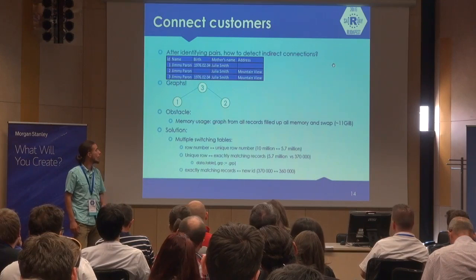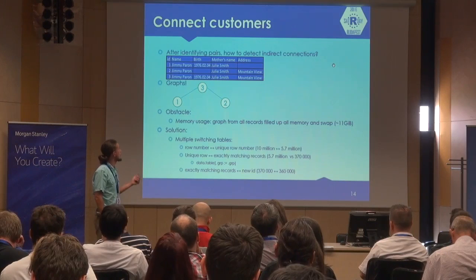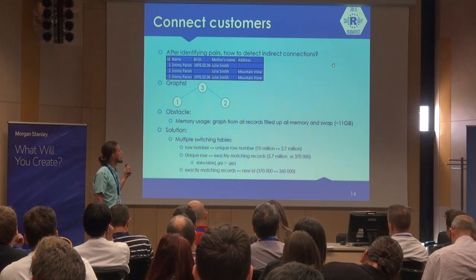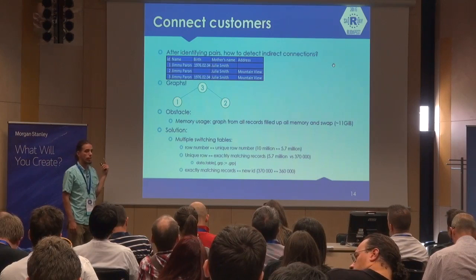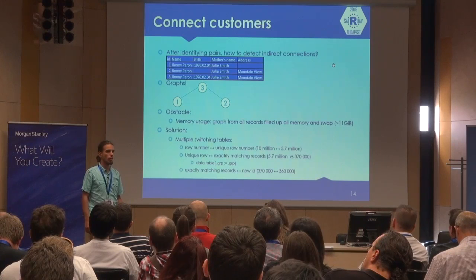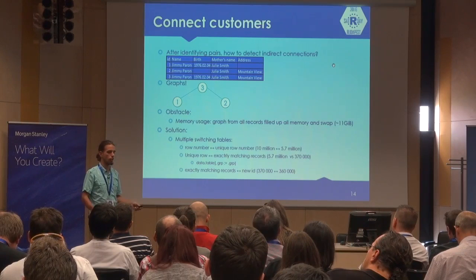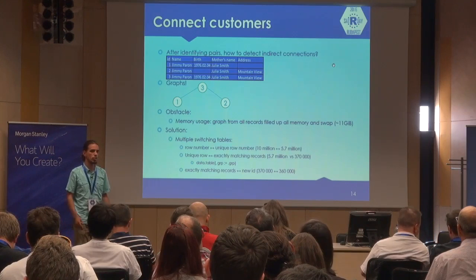We wanted a script where having the first and second records not matching on our criteria, but after adding a third record we could connect them. For this we used iGraph — though it didn't fit easily in the memory we had. We had to do a lot of work to shrink the data to a size where we could manage creating the graph. After we created the graph, it was pretty easy — we just extracted the components and gave an ID to each.